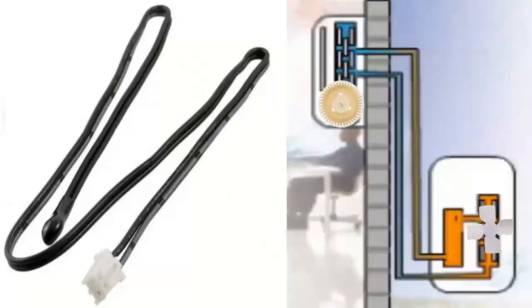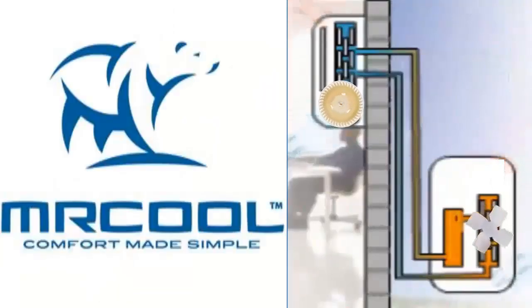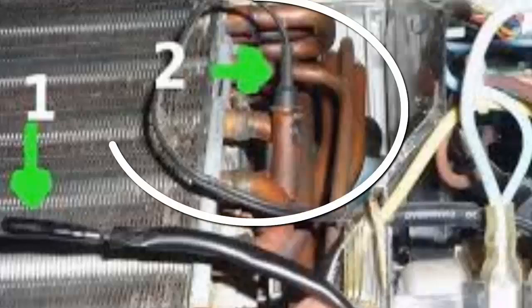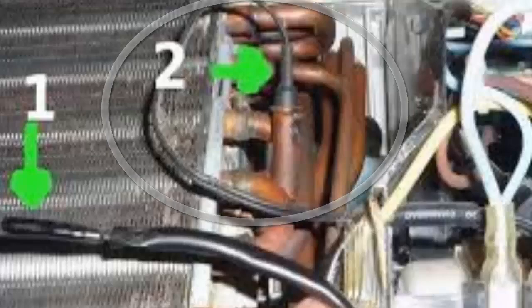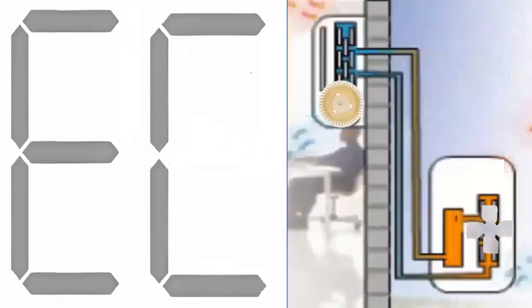1. Codes related to the wall or pipe sensor of the indoor unit coil, evaporator, and cooling mode. These are identified by the codes E5, EC56, and EH61.